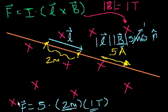The magnitude of this force is going to be equal to 5 amperes times 2 meters times 1 tesla, which is equal to 10 newtons. And then the only question left is, what is the direction of the force that the magnetic field is exerting?